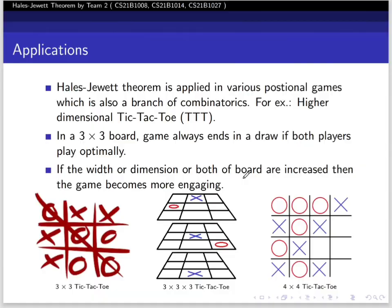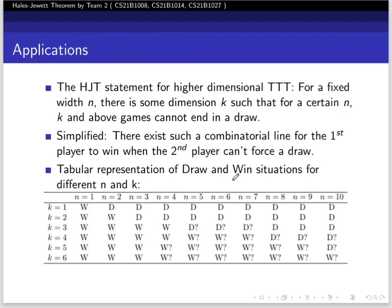Now we look at applications of HJT theorem. This theorem is applied in various positional games, a branch of combinatorics. Here we'll look at tic-tac-toe. In a 3×3 board, the game always ends in a draw if both players play optimally. But if we increase width or dimension of the board, the game becomes more engaging. The HJT statement for higher dimensional tic-tac-toe is: for a fixed width n, there is some dimension k such that games cannot end in a draw. The simplified version is there exists a combinatorial line for the first player to win.